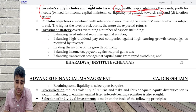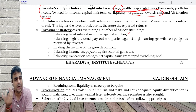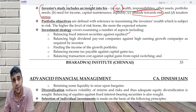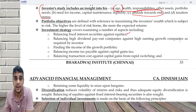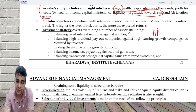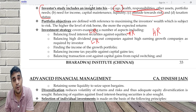Based on this, I decide the investment strategy: balancing fixed interest securities against equities. Fixed interest means low risk; equity means high risk. High dividend payout companies are technically lower-risk companies compared to high earnings growth companies, which are high risk. Finding the income versus the growth component — which is basically dividend versus growth capability. Balancing income tax payable against capital gains tax — on dividends you pay tax against capital gains.